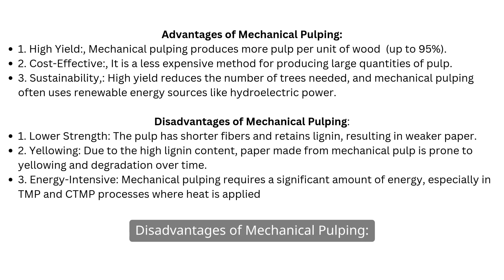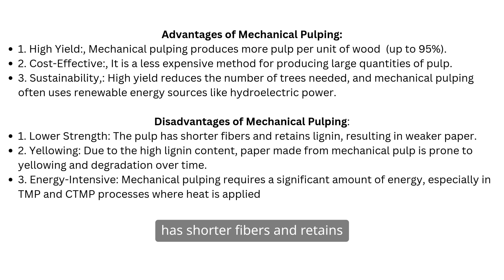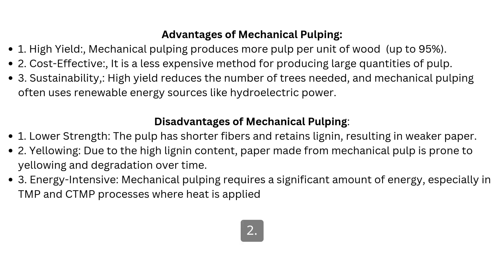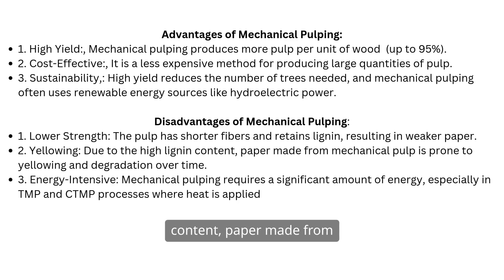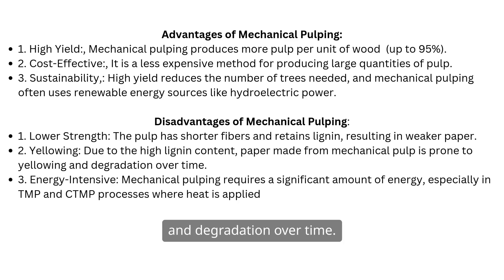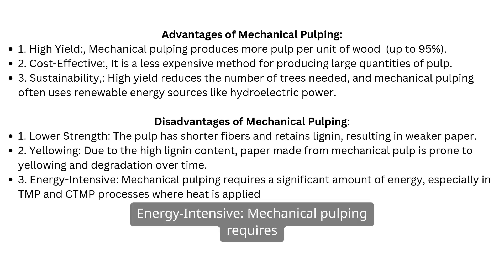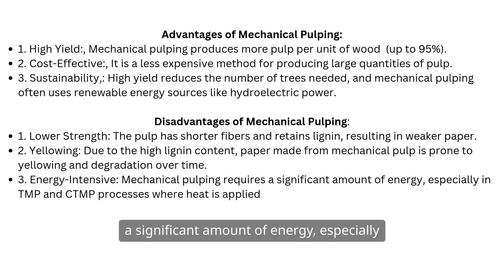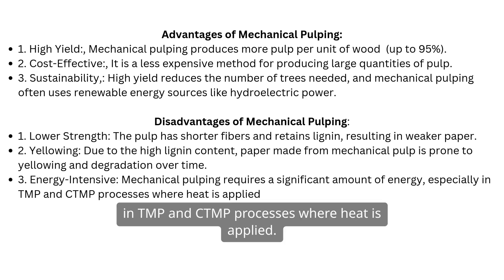Disadvantages of mechanical pulping. One: lower strength — the pulp produced has shorter fibres and retains lignin, resulting in weaker paper. Two: yellowing — due to the high lignin content, paper made from mechanical pulp is prone to yellowing and degradation over time. Three: energy intensive — mechanical pulping requires a significant amount of energy, especially in TMP and CTMP processes where heat is applied.